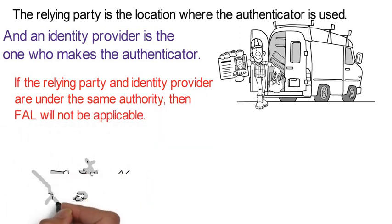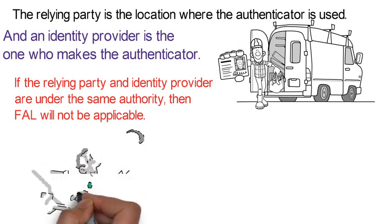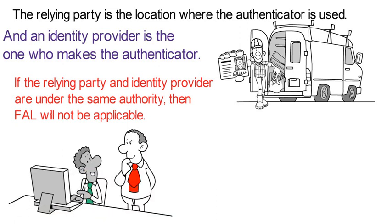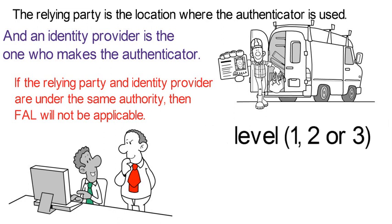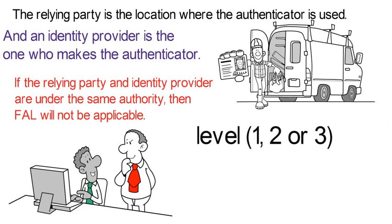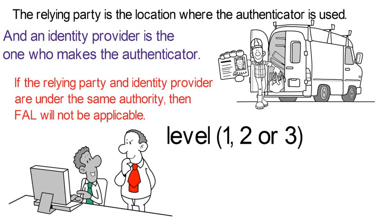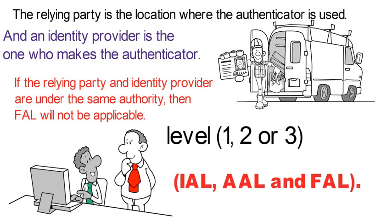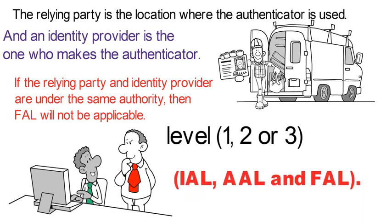If the relying party and the identity provider are under the same authority, then FAL will not be applicable. If they are not the same authority, then FAL will apply. Remember, we will need to identify what level — one, two, or three — we can assign to each of these categories: IAL, AAL, and FAL. Now, let's take a deeper dive.